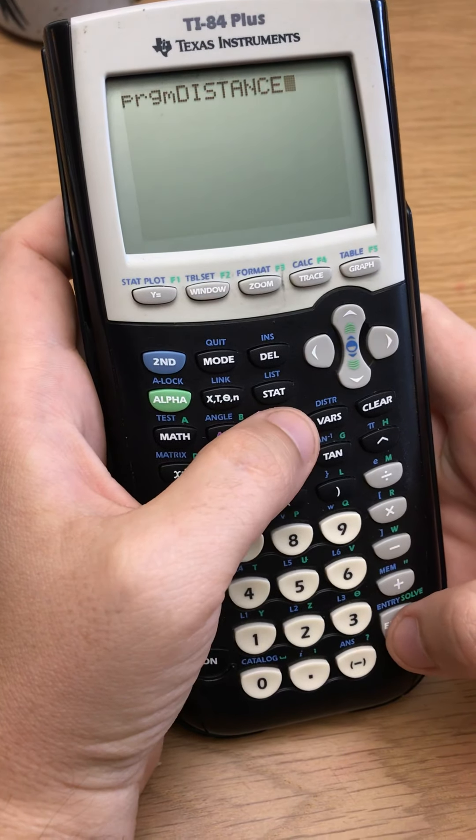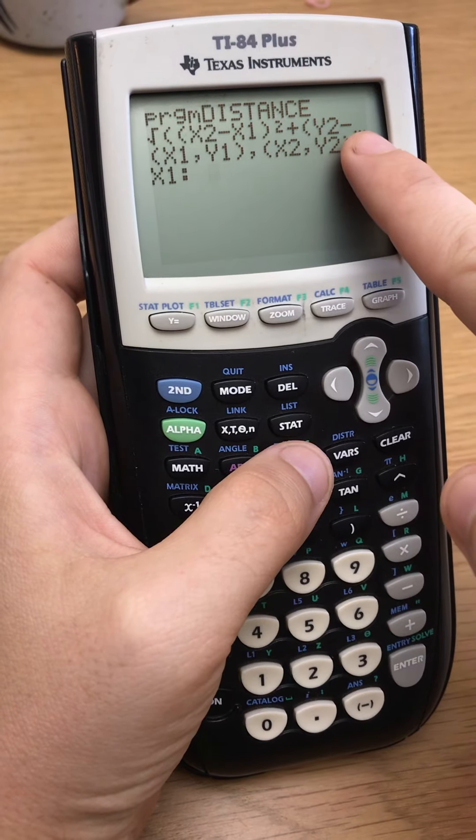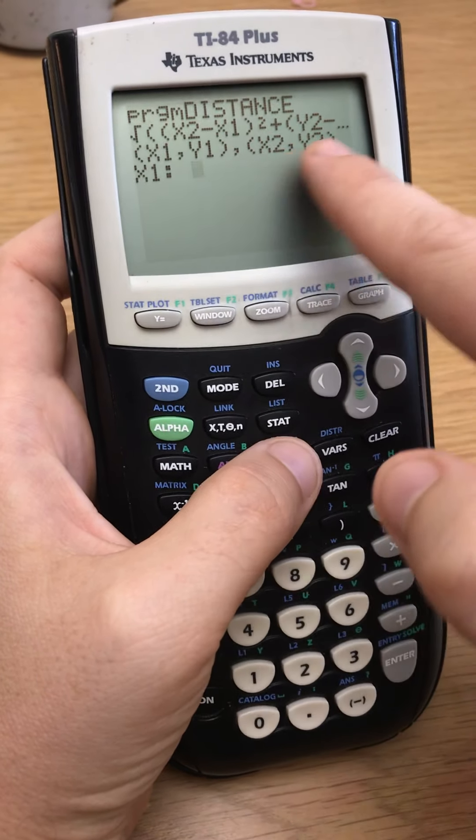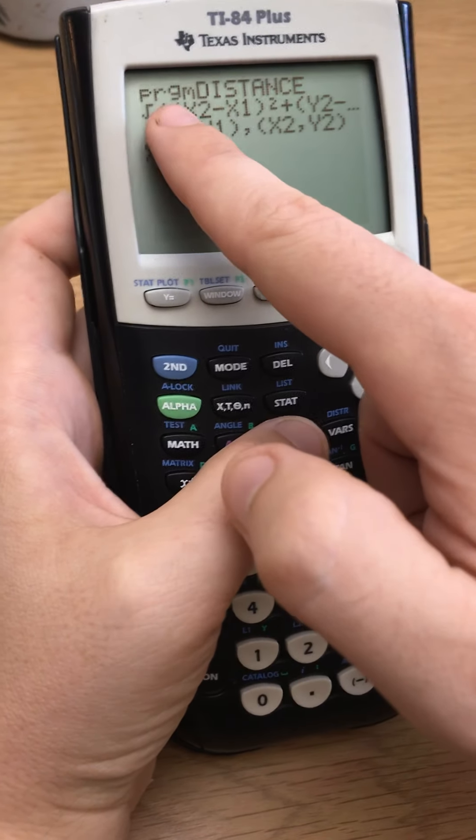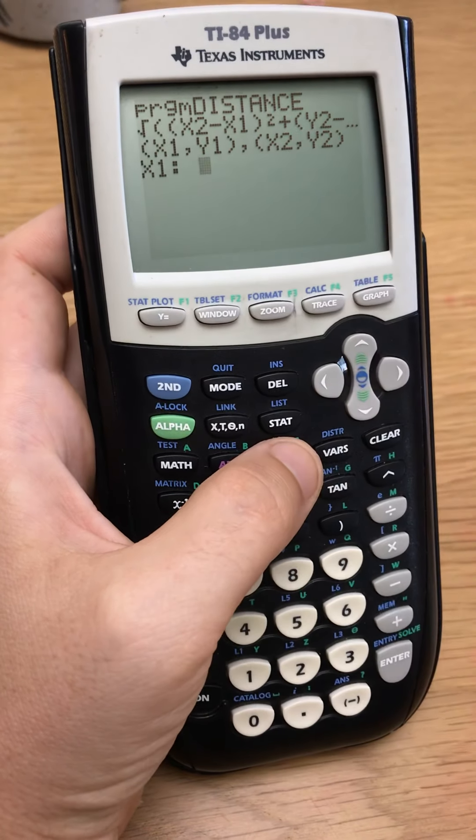So this one's the distance formula, right? So notice I have the formula here. It doesn't display the whole thing because it's a long formula. But then I have the two points right here, x1, y1, x2, y2. So I would highly recommend this. You don't have to display the formula first, but I would recommend it and that way you don't get it confused which variables you're typing in.